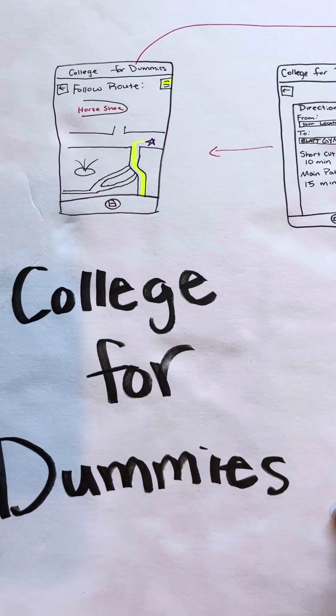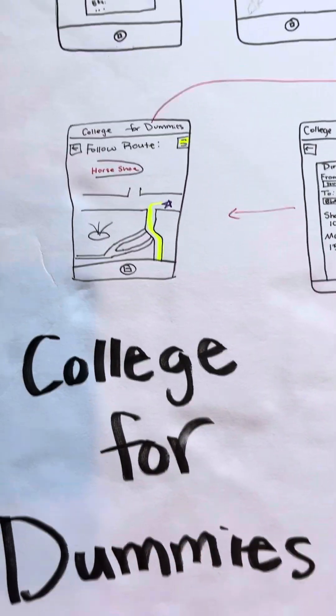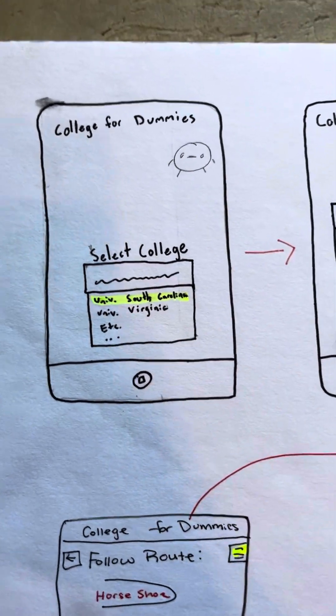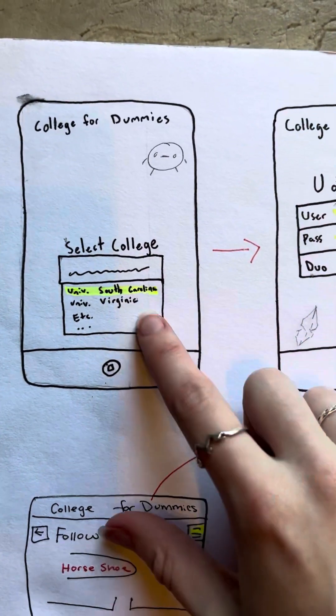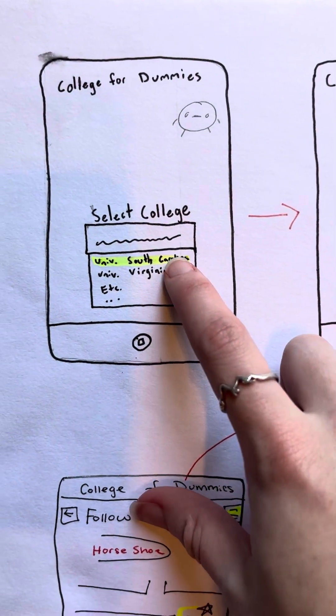Welcome to our app, College for Dummies. Starting off, you come to the main screen, the beginning screen, where you select your college. We're selecting the University of South Carolina.